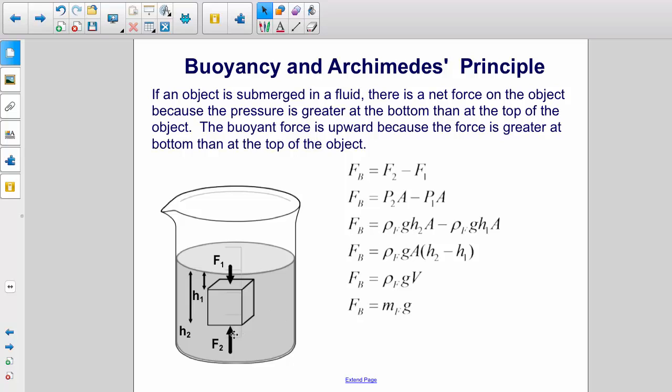We can factor out the density g and A to get rho g A times the difference in the depths.